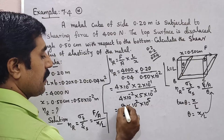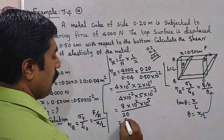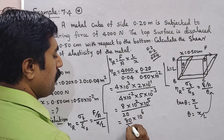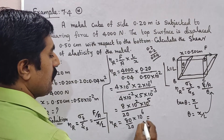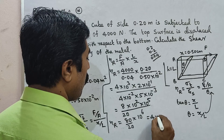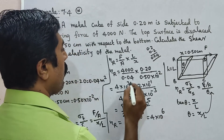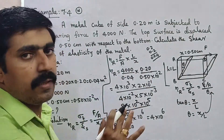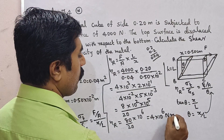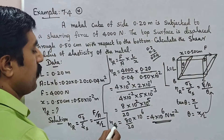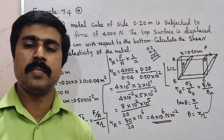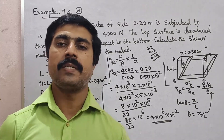Working through the powers of 10, eta-r equals 4 times 10⁶ N/m². So the shear modulus of elasticity of the metal is 4 times 10⁶ N/m². All the best, thank you!